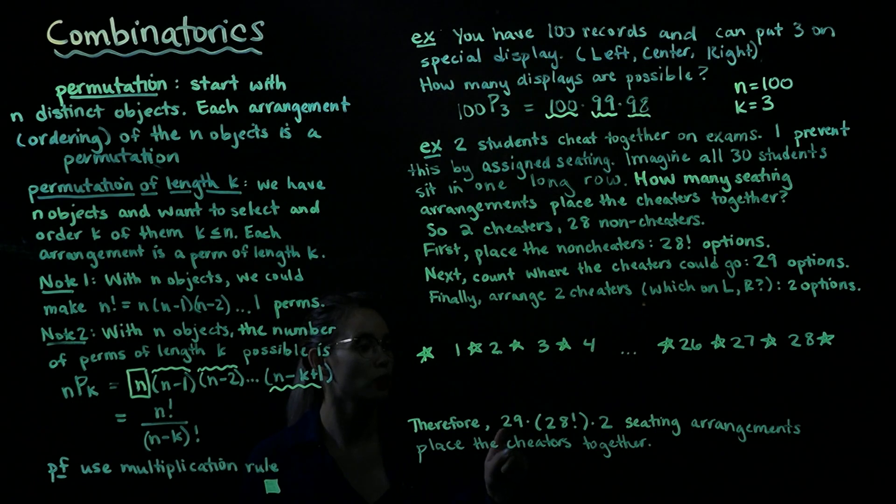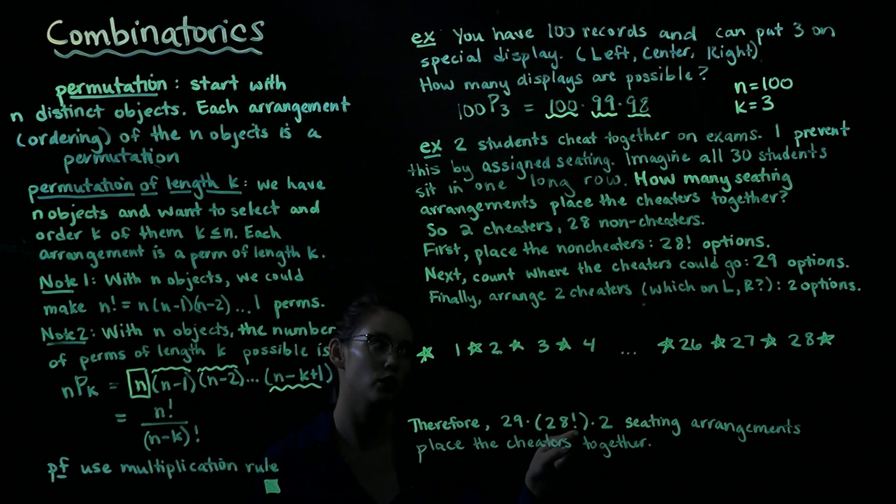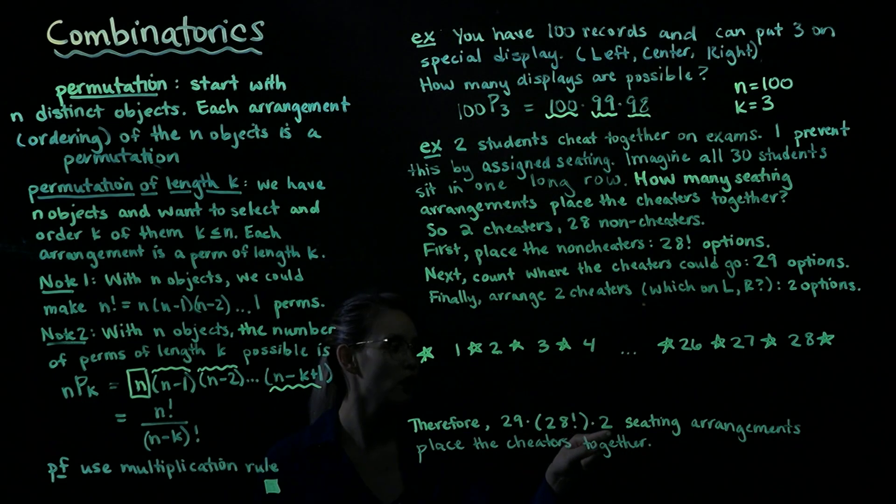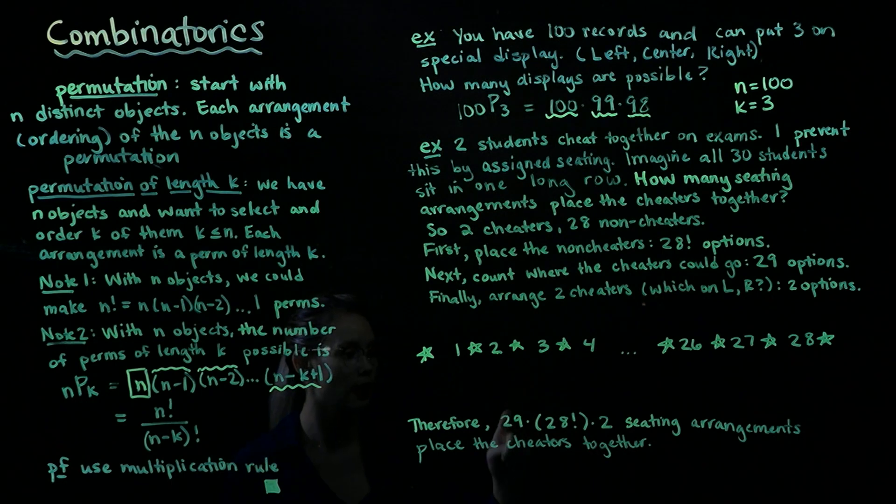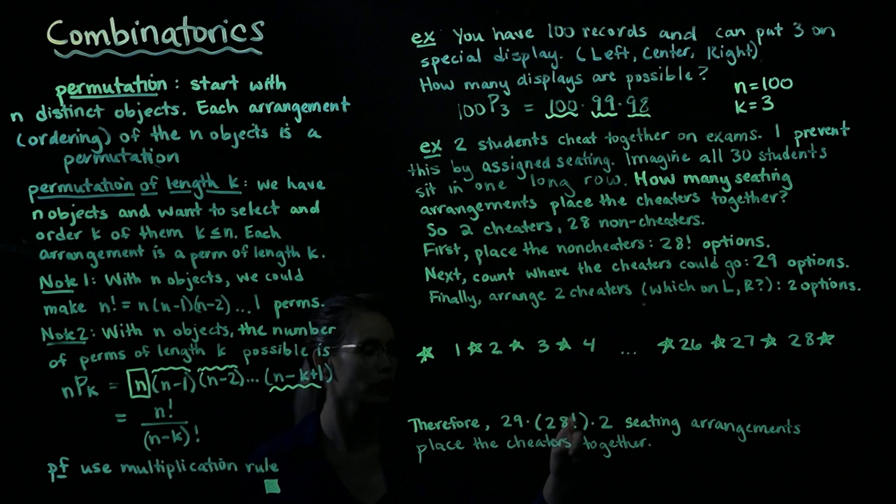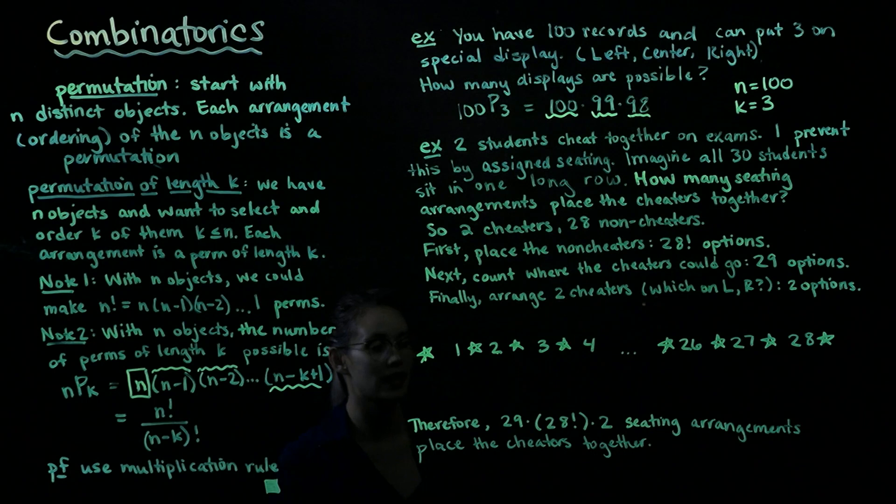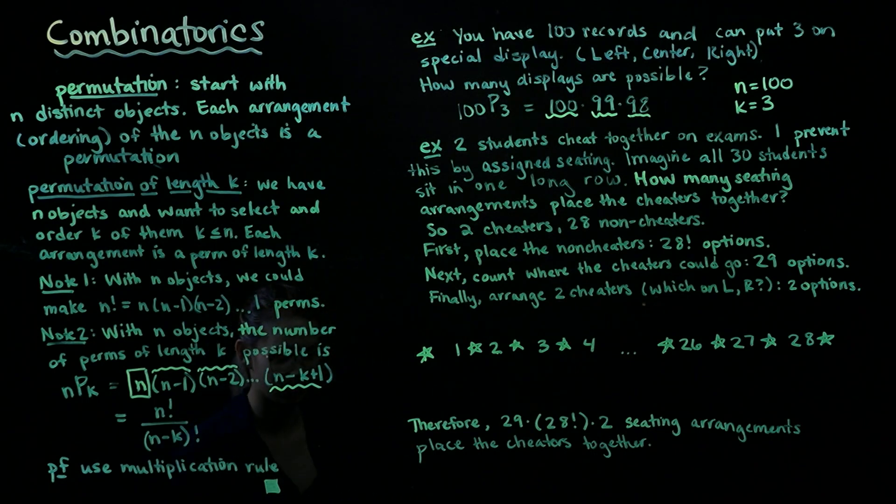We have 28 factorial different ways to arrange the non-cheaters. And then we have two ways of deciding who goes on the left side, who goes on the right side. And so that gives us a product of 29 times 28 factorial times 2, and that's how many seating arrangements would place the cheaters together.